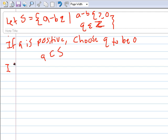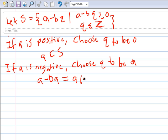If A is negative, choose Q to be A. Then we would have A minus BA equals A times 1 minus B. Since B was strictly positive, this 1 minus B is negative. A is negative by assumption. So we have a negative times a negative, which equals a positive. So A minus BA will be in the set S.